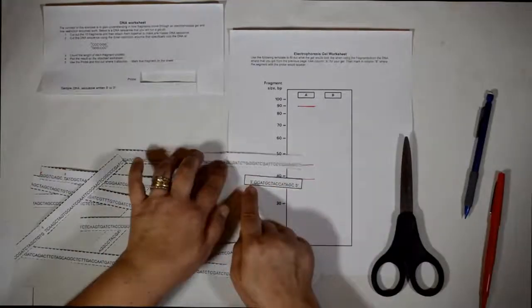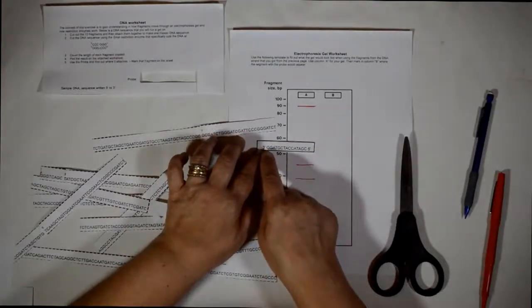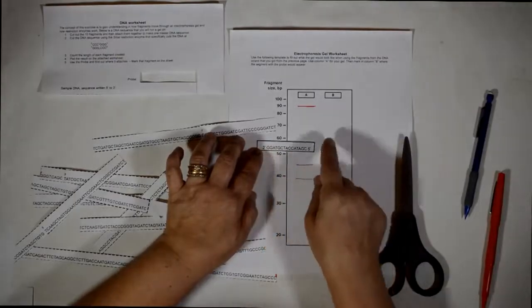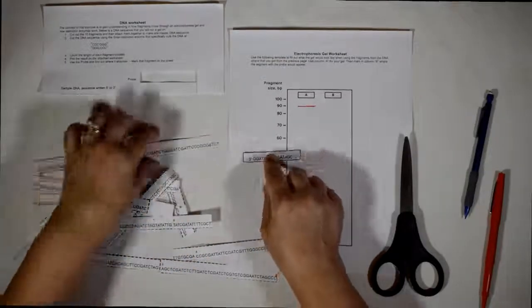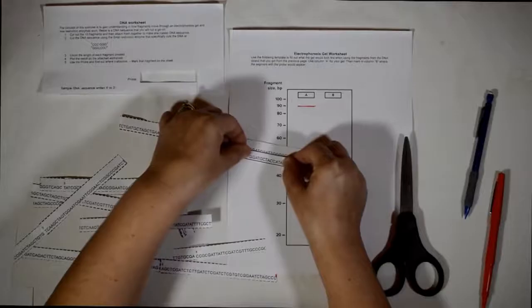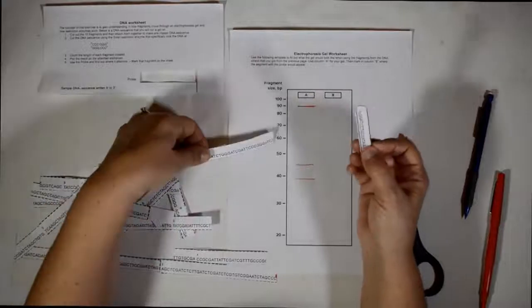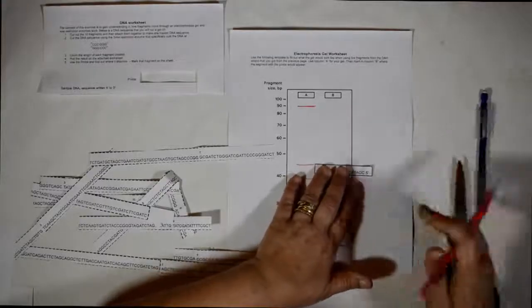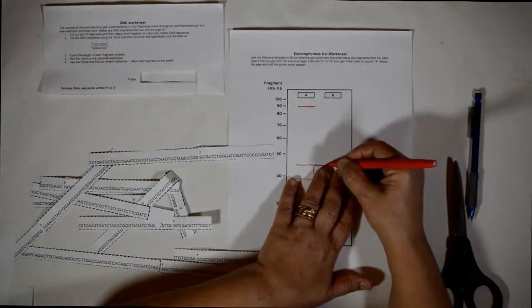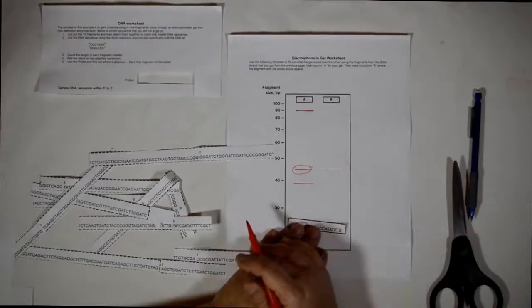And what you need to look for is a spot where you find the correspondent. And correspondent means if the probe is GGAT, you're looking for CCTA and so on. So you're going to match where this location is. And once you have it there, that's where the probe would attach to that fragment. Whichever fragment you find out that the probe is attaching, that's where you're going to mark here on your sheet. So if it was here, you're just going to mark here. Now you know that this is the fragment that you're looking for because the probe located it for you.